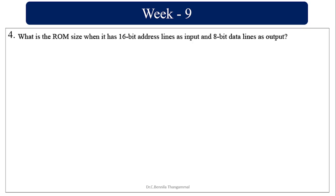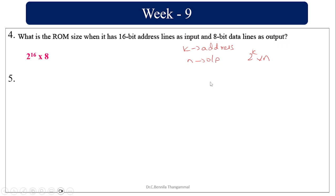What is the ROM size when it has 16-bit address lines as input and 8-bit data lines as output? Generally, if you have k address lines and n output lines, the size is 2^k × n. So with 16 address lines and 8 data lines, the ROM size is 2^16 × 8.